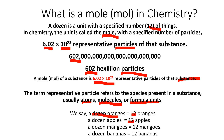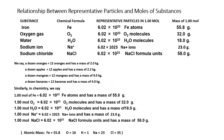Just like a dozen — a dozen oranges has 12 oranges, a dozen apples 12 apples, a dozen mangoes 12 mangoes, a dozen bananas 12 bananas — in chemistry, the relationship between representative particles and moles works similarly. For example, for iron (chemical formula Fe), one mole contains 6.02 times 10 to the 23rd iron atoms, and the mass of one mole of iron is 55.8 grams.